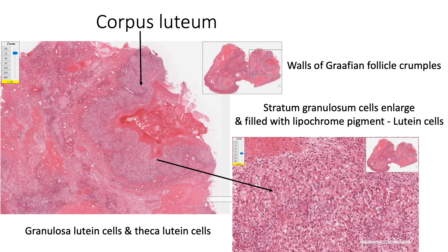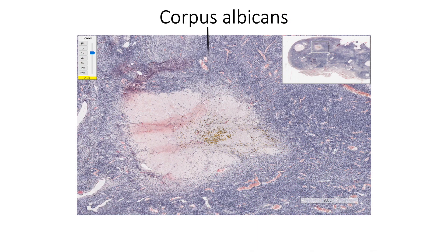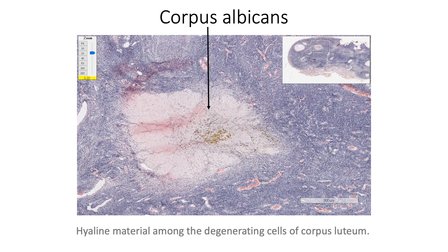If the ovulated oocyte is fertilized, the corpus luteum will function for about 3 to 4 months, when it is called the corpus luteum of pregnancy. If it is not fertilized, the corpus luteum will function for about 14 days, when it is called the corpus luteum of menstruation. The corpus luteum then degenerates: the corpus luteal cells involute and undergo autolysis, and the persisting white scar is called the corpus albicans. A large amount of hyaline material accumulates among the degenerating cells.